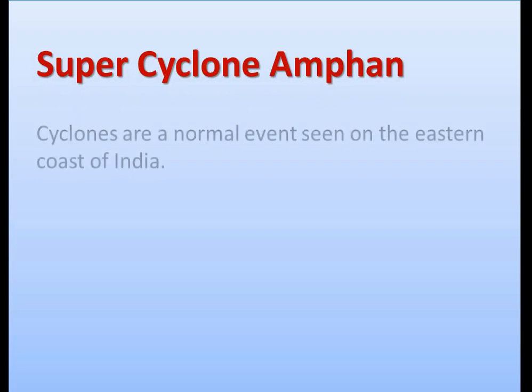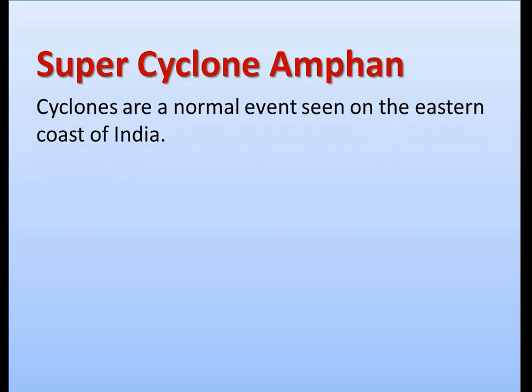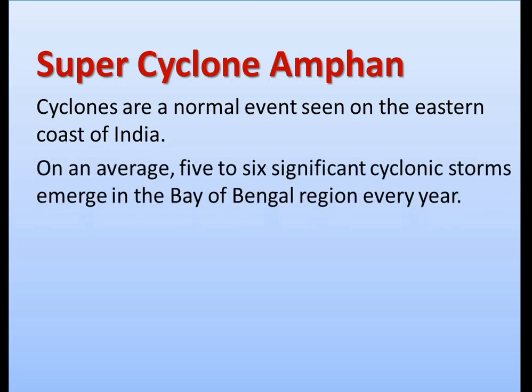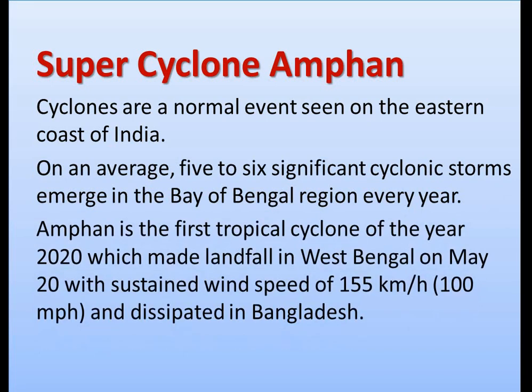Cyclones are a normal event seen on the eastern coast of India. On average, five to six significant cyclonic storms emerge in the Bay of Bengal region every year. Amphan is the first tropical cyclone of the year 2020, which made landfall in West Bengal on May 20 with sustained wind speed of 155 kilometers per hour (100 miles per hour) and dissipated in Bangladesh.